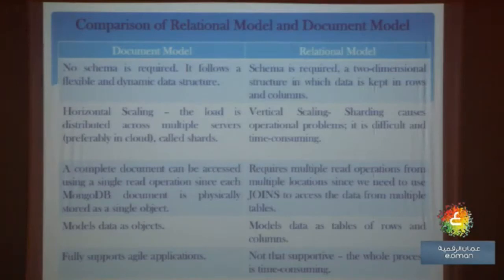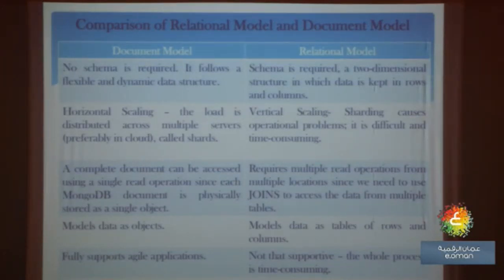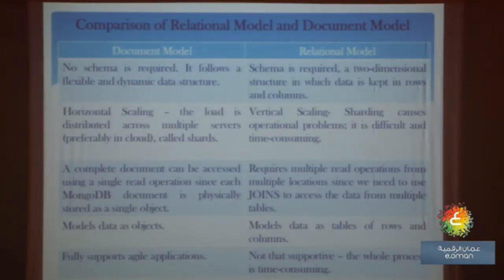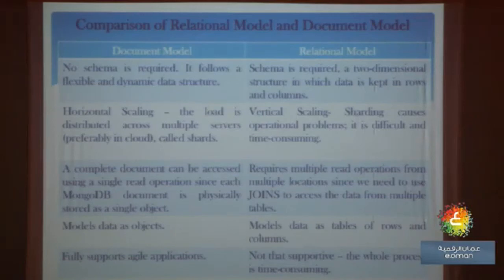The main comparison points are: no schema is required for document model, whereas schema is required for relational model. In document model, data is modeled as objects, while relational model uses tables of rows and columns. Document model and NoSQL databases support agile applications, whereas relational model is not as supportive of agile development.